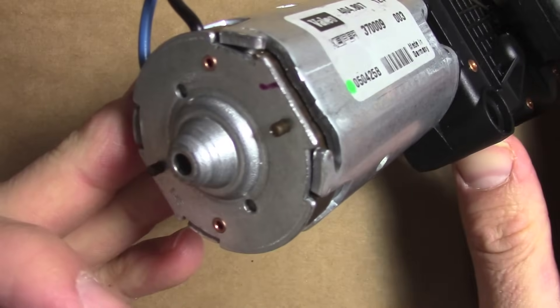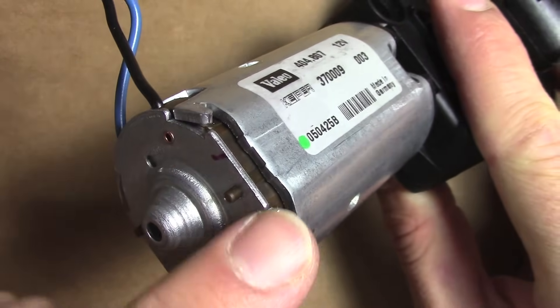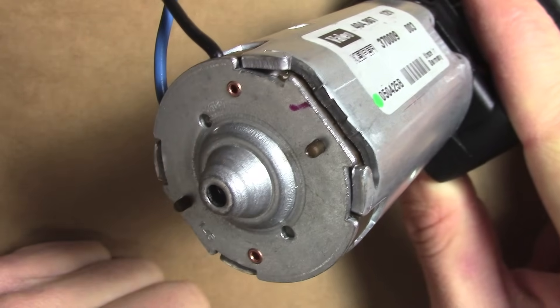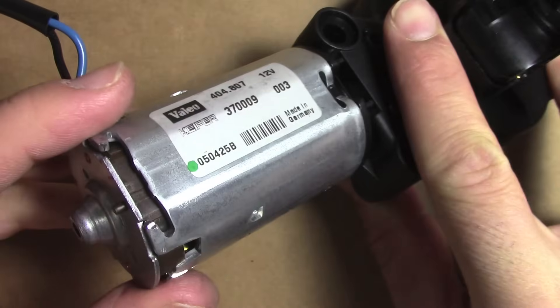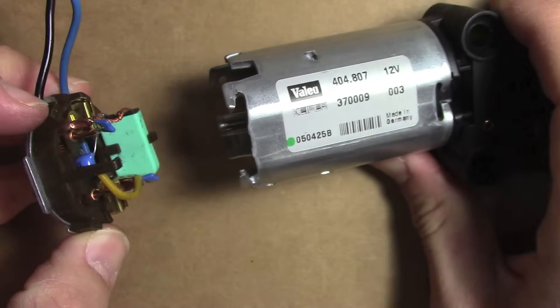So to open up the motor to fix it, you have to bend these little tabs. There's four of them. Just get some pliers and bend them, and then you can slip out this piece.